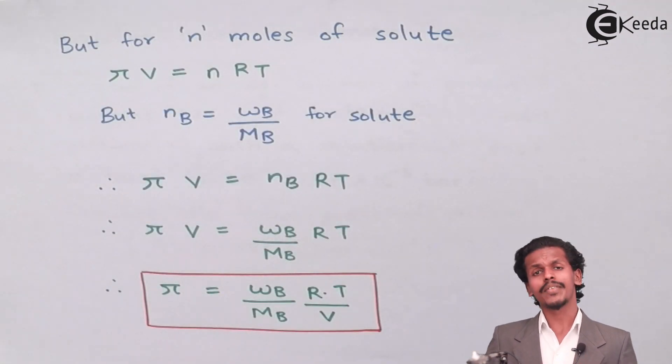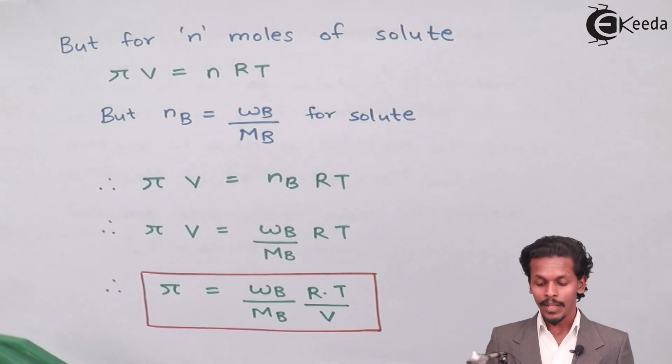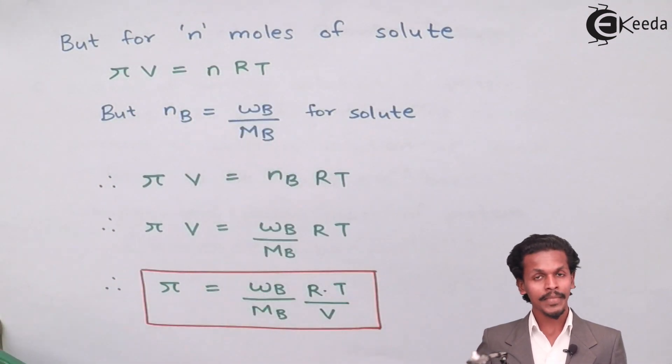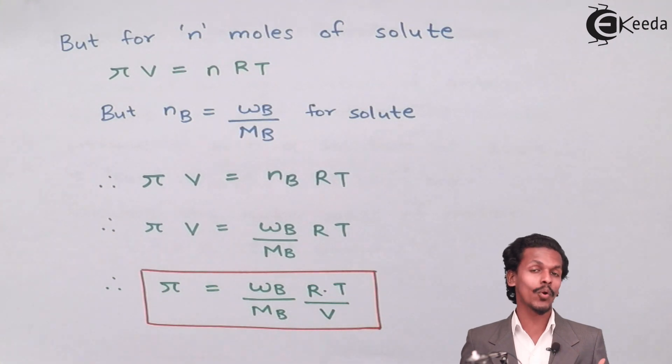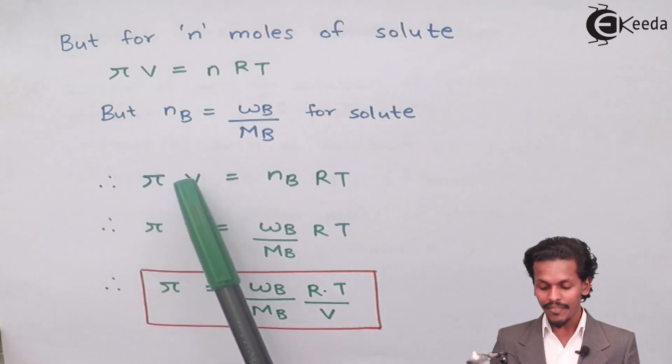Suppose we have n moles of solute. The previous equation πV equals RT will now be converted into πV equals nRT, where n stands for the number of moles of solute.